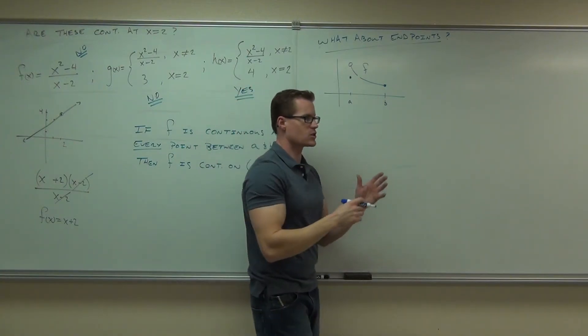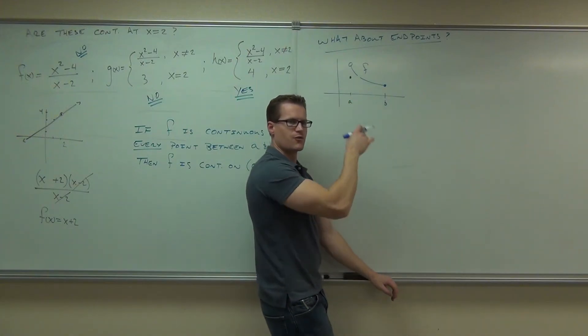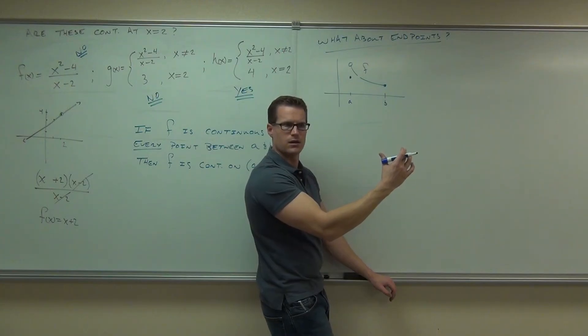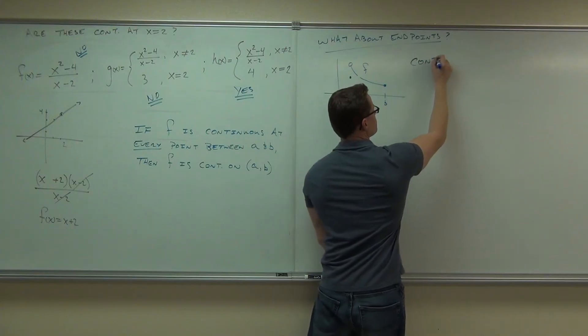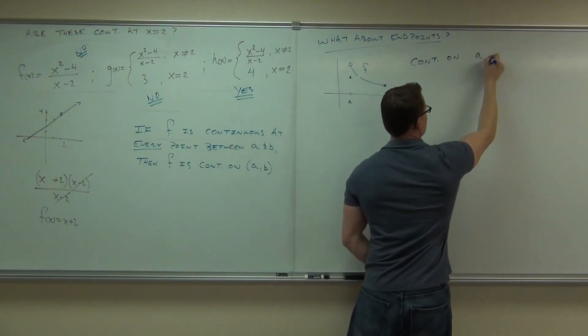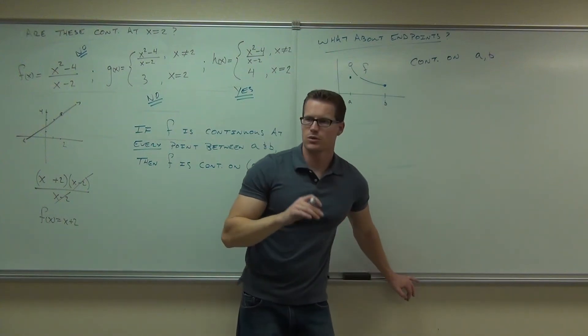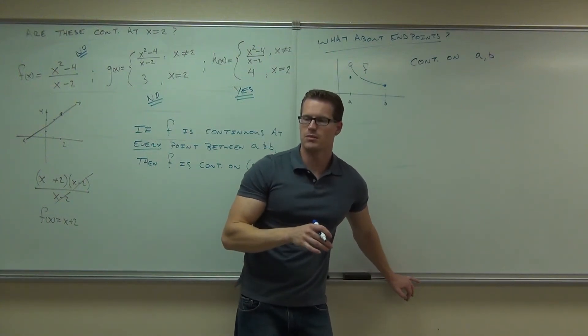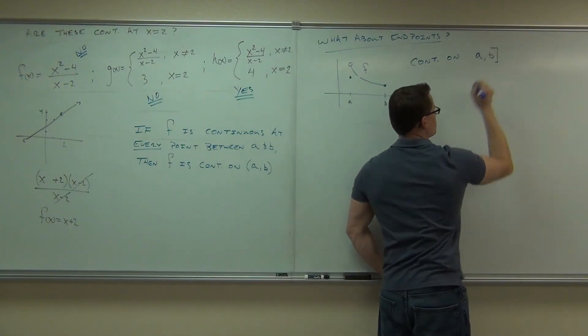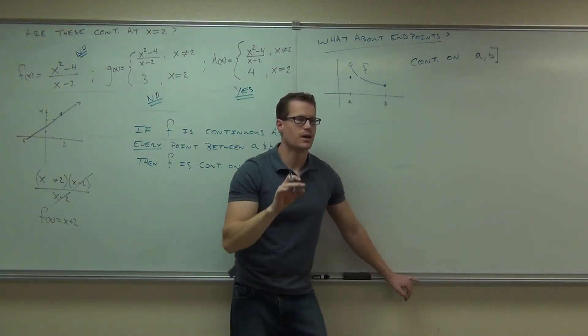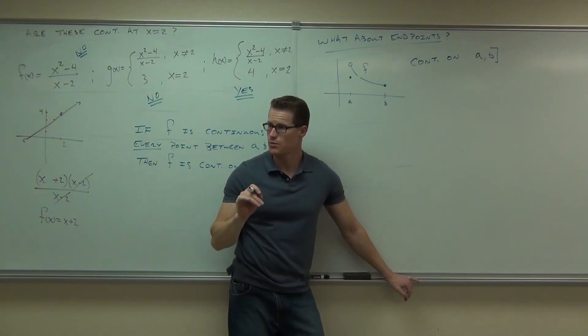So we'd say this is continuous on, but how would we write that? If it's continuous from a to b, but it includes b and not a, how do I write that? One bracket, one parenthesis, sure. So this is continuous on, I know it goes from a to b. Again, does it include the b? Yes, because the point's there, the limit's there, and they equal the same thing. How do I show that? Is it the bracket or the parenthesis? That's the bracket. That says I include the point b. Now, I can't include the point a because the limit exists from one side. The point is there, sure, but it's not the same.